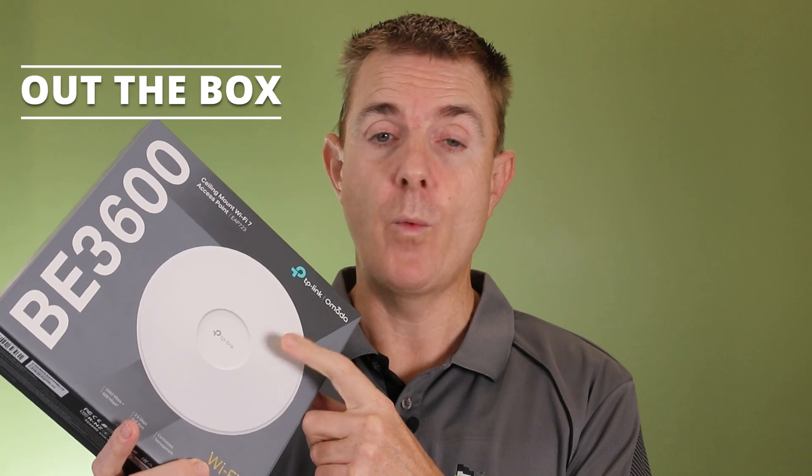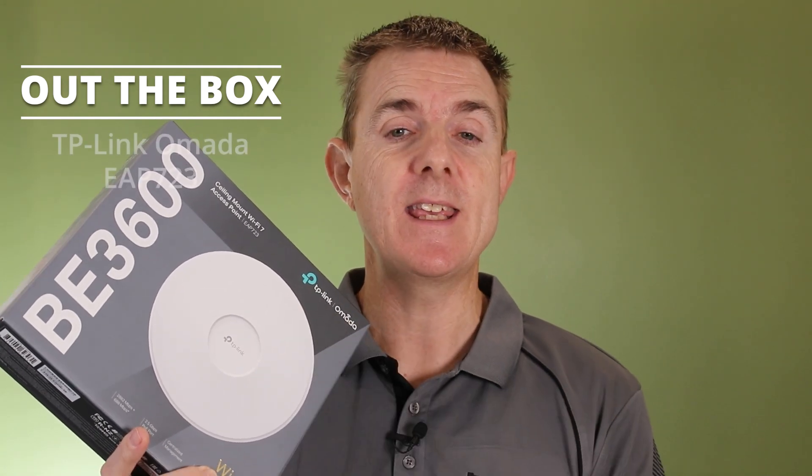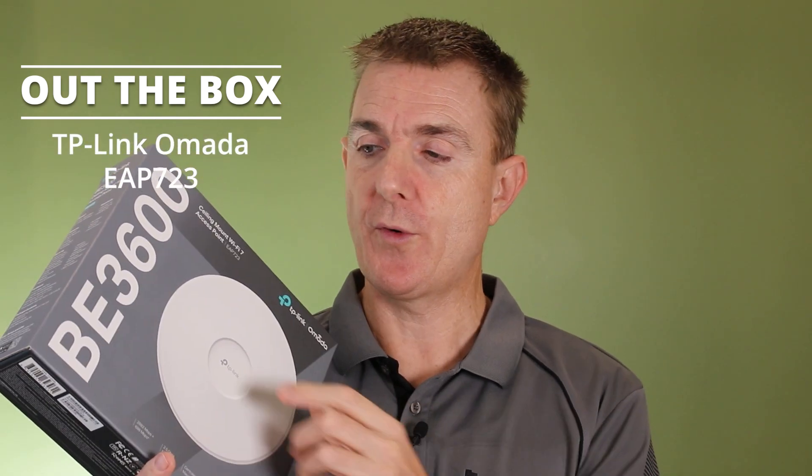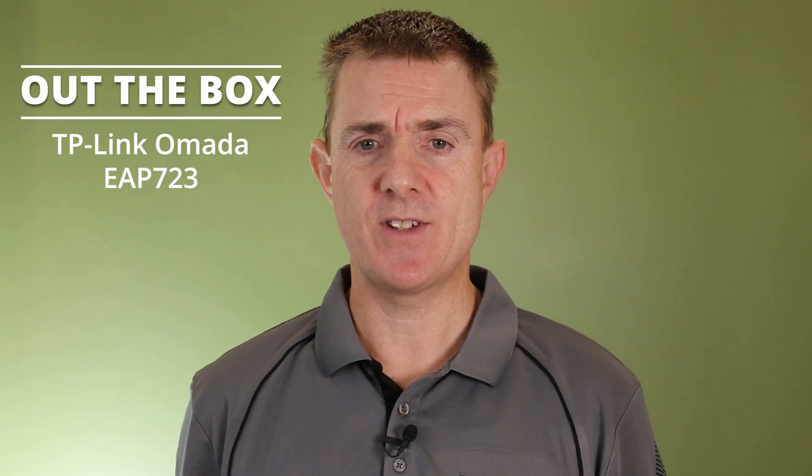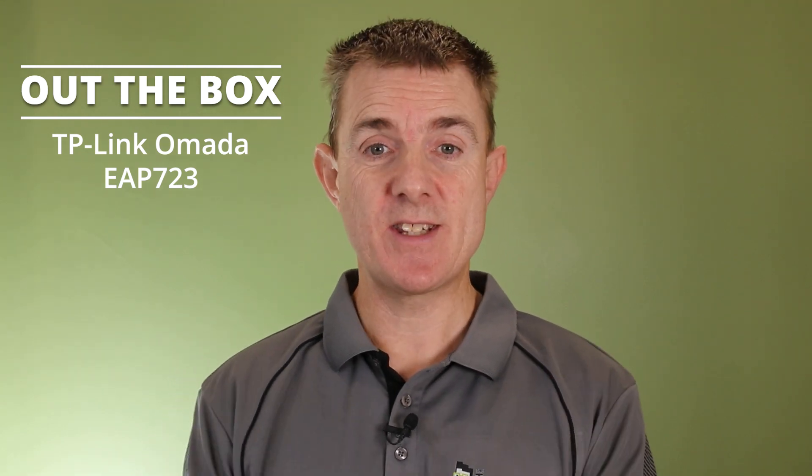This is a TP-Link Omada Wireless 7 Access Point. This is the EAP723. This is a BE3600. Now you'll probably start to see some of these numbers around. BE stands for Wireless 7.